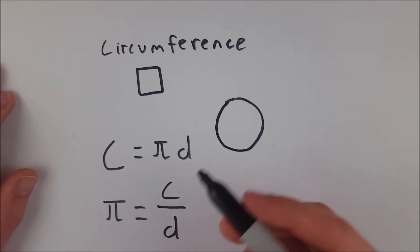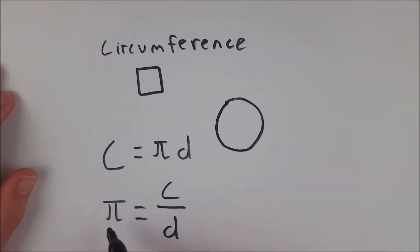No matter what circle you look at, if you take its circumference and divide by its diameter, the resulting number is pi.